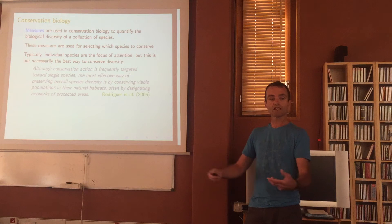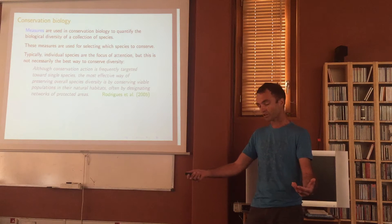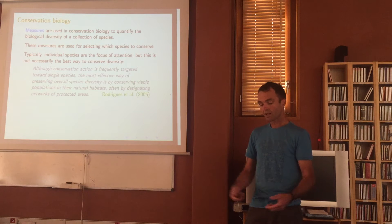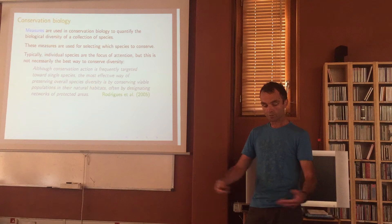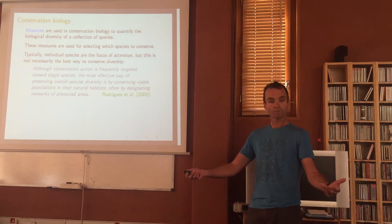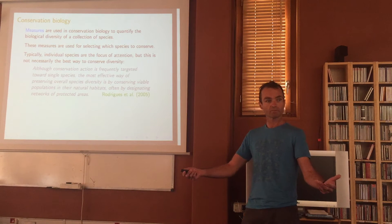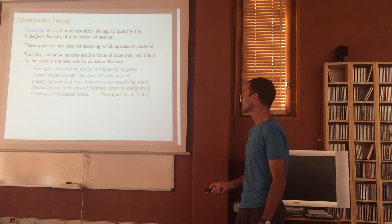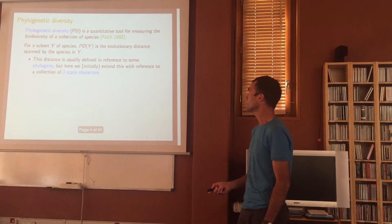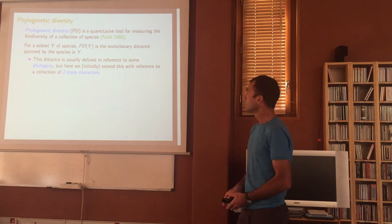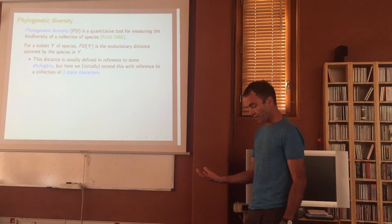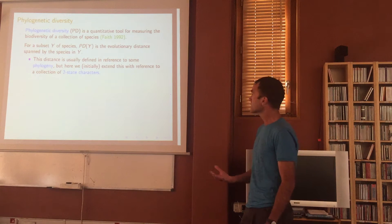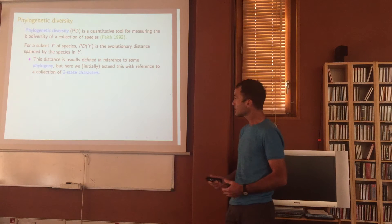The ones I can afford to look after — because I've got a fixed budget with some constraints — I want the measure to be as big as possible. The measure we're going to use is called phylogenetic diversity, which has been around since Faith 1992. An Australian biologist, Dan Faith, developed it.